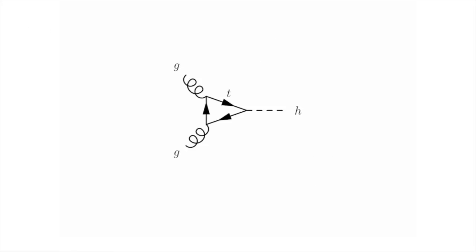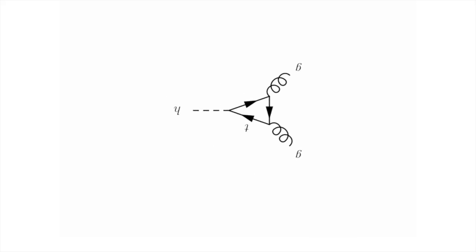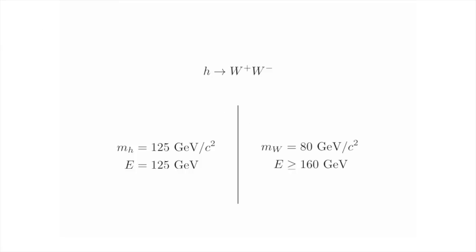Are there any other decays of the Higgs boson other than to matter in the standard model? Well, the answer is yes. For example, the production process of the Higgs most relevant to the LHC involves two gluons interacting to form a top which radiates a Higgs. Now we can just turn this picture around: we have a diagram where the Higgs is decaying to two gluons. This is a perfectly allowed process because gluons are exactly massless particles. In a similar way, we can have an interaction of the Higgs where it decays into two photons. Again, photons are massless, so this is perfectly allowed.